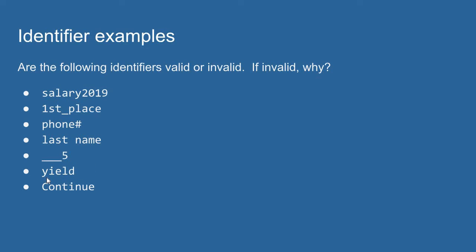Our next example, we have the identifier yield. This looks like a valid identifier, but it is not because yield happens to be a keyword in the Python language. Because yield is a keyword, we cannot use the word yield as an identifier.